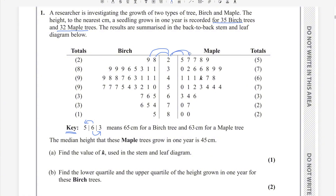The median height that the maple trees grow in one year is 45 centimeters. The median is represented by Q2. For maple trees, Q2 equals 45. To find which value is the median for maple — there are 32 trees — we divide 32 by 2.